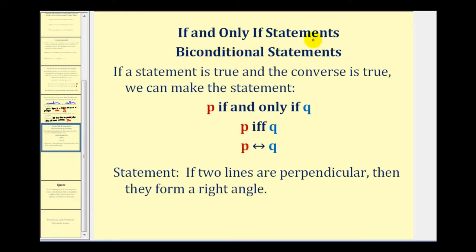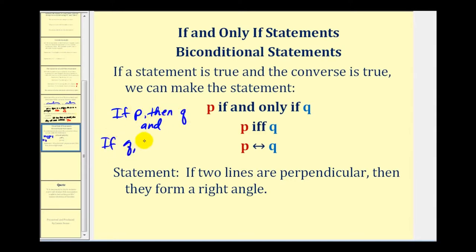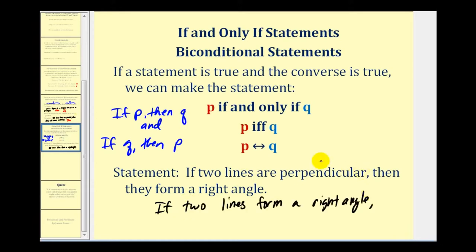Let's finish by talking about if and only if statements, also called biconditional statements. If a statement is true and the converse is also true, we can state P if and only if Q. This means if P then Q is true and if Q then P is also true. For example, 'if two lines are perpendicular then they form a right angle' is an if and only if statement, because the converse — if two lines form a right angle then the lines are perpendicular — is also true.